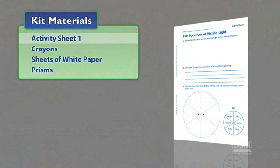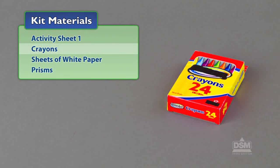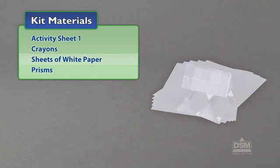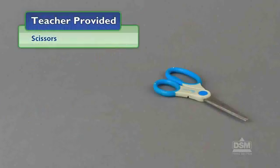You will need the following materials from the kit: Activity Sheet 1, crayons, sheets of white paper, and prisms. You will also need to provide scissors.